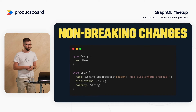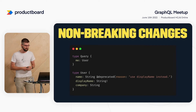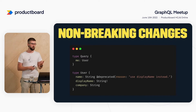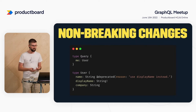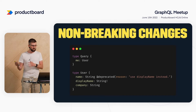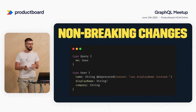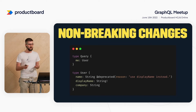GraphQL is also super opinionated about non-breaking changes. In this example, we're using the 'deprecated' directive, which provides a reason: 'please don't use name anymore, use display name.' That's something very specific to GraphQL because it's designed with this evolution in mind.